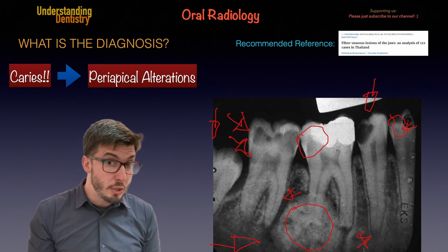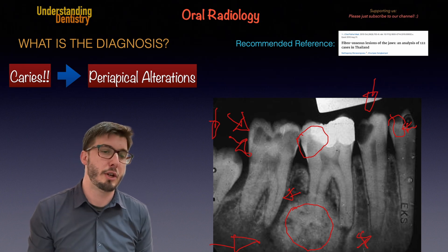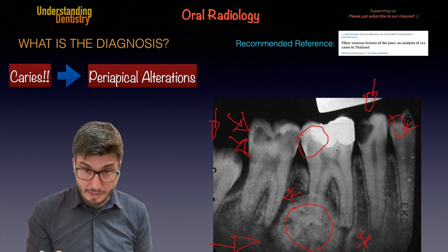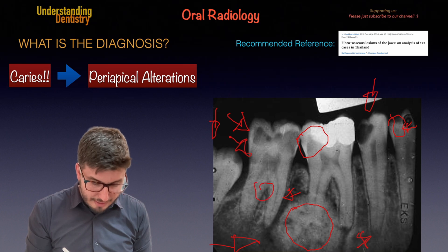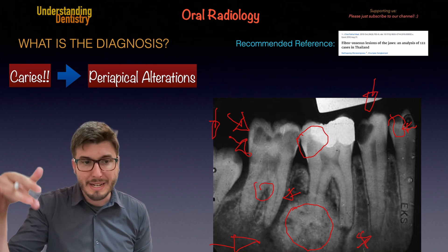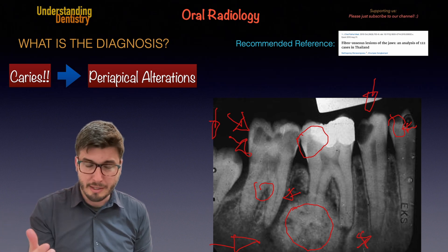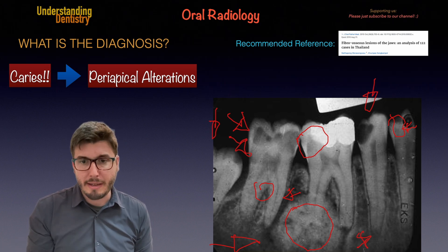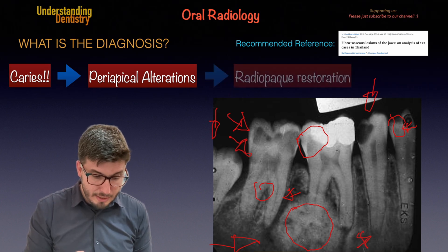If you guys are wondering if this could be cervical burnout — well, not really, just compare to the other side. This is not the pattern of cervical burnout for this patient. We also have an image suggesting resorption of the bone at the furcation, so probably the buccal aspects of the furcation would be exposed. Maybe not fully exposed at level 3, but we would most likely find a furcation exposure here.